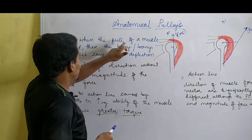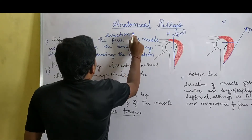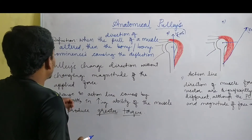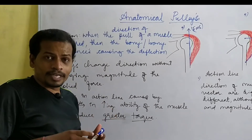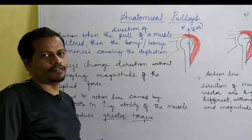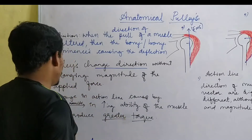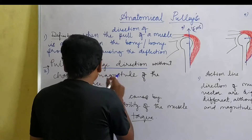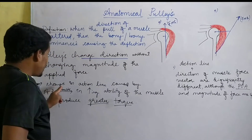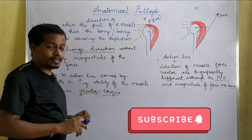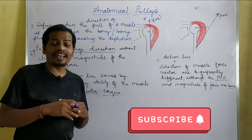When the direction of pull of a muscle is altered, the bone or bony prominences causing this deflection forms an anatomical pulley. Anatomical pulleys are nothing but the bony prominences which cause the deflection of the muscle. Pulleys only change the direction without changing the magnitude — the amount of force applied. The change in action line caused by the anatomical pulleys results in increasing the ability of that particular muscle to produce a greater amount of torque.